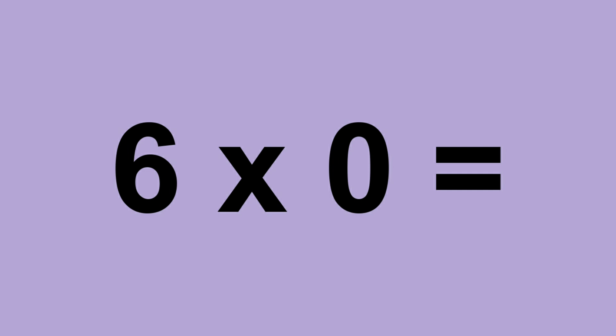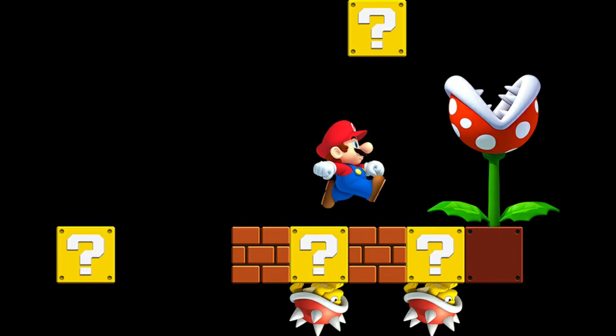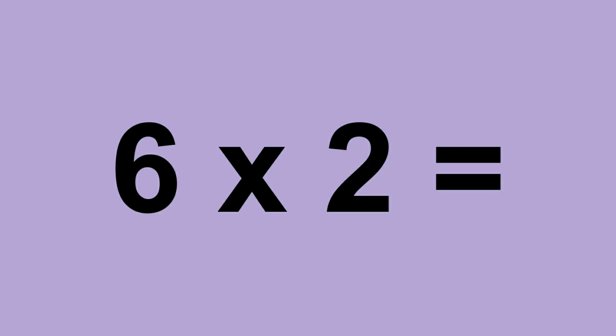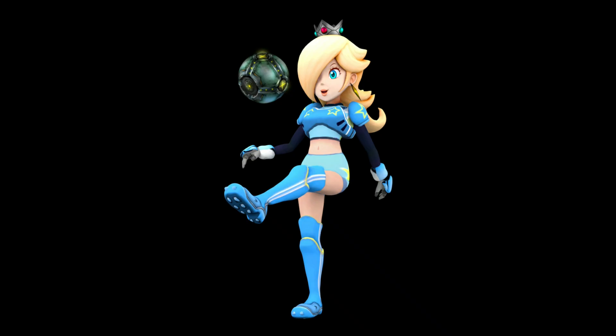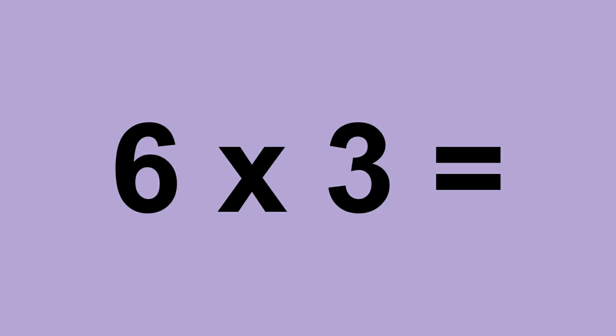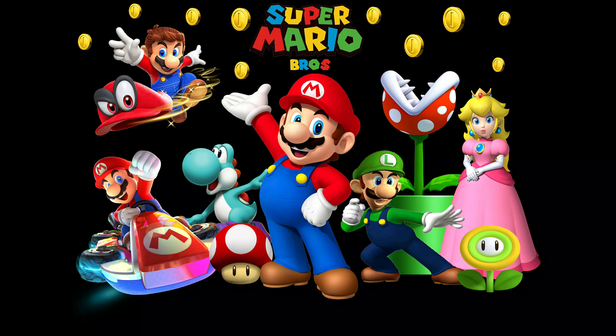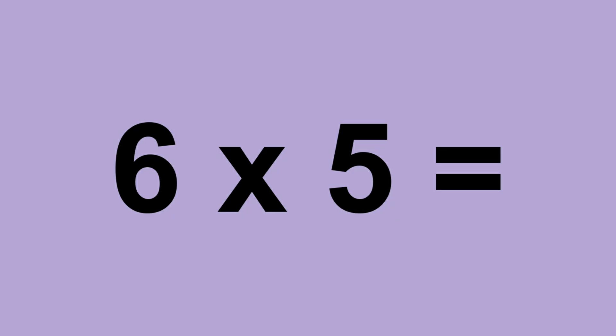Six times zero equals zero. Six times one equals six. Six times two equals twelve. Six times three equals eighteen. Six times four equals twenty-four. Six times five equals thirty.